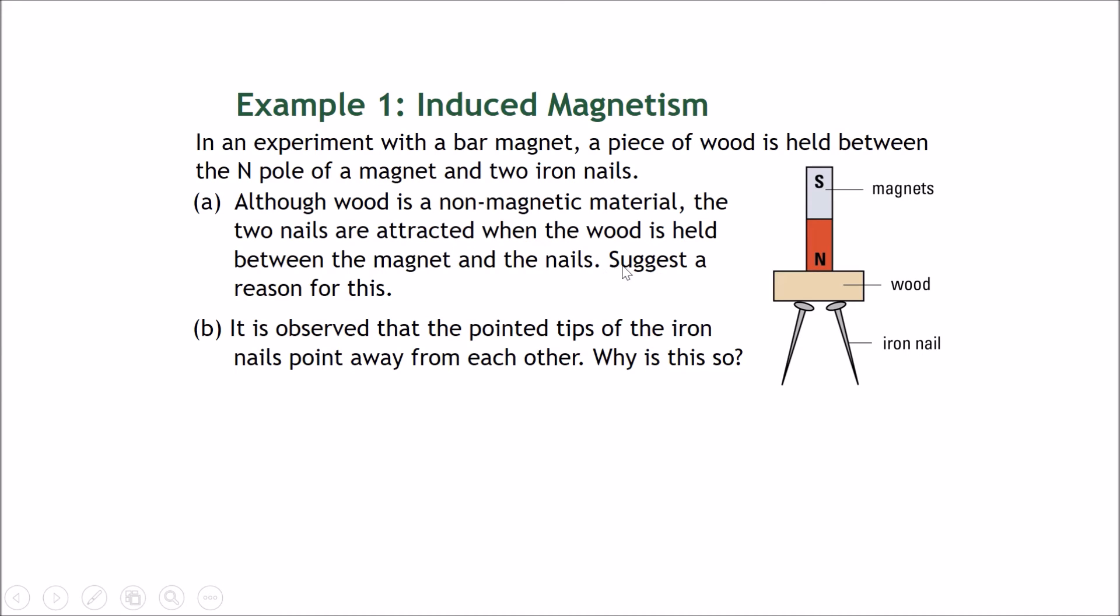Firstly, the magnet has a strong enough magnetic field around it. The magnetic influence that this magnet has goes beyond the wood and passes through it. So it manages to pass through the wood and affect the iron nails to be attracted to this part of the magnet.